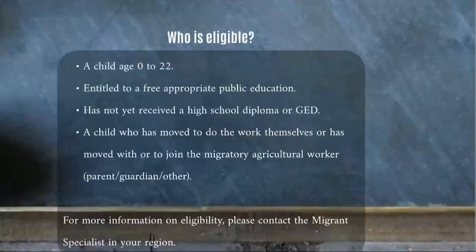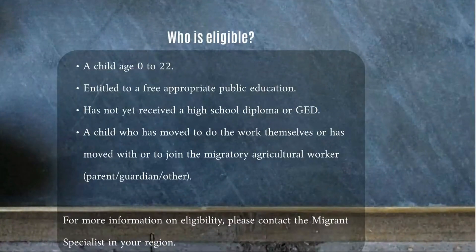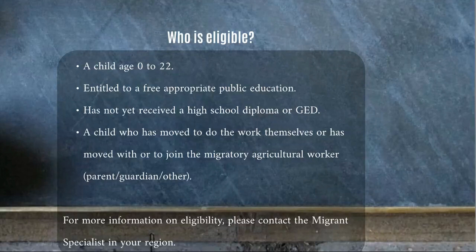Who is eligible for the program? A child aged zero to 22, entitled to a free public education, having not yet received a high school diploma or GED, and has moved to do the work themselves, or has moved with or to join the migratory agriculture worker such as the parent or guardian. For more information on eligibility, please contact the migrant specialist in your region.